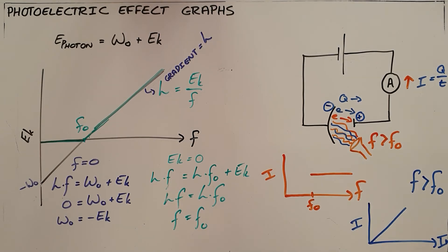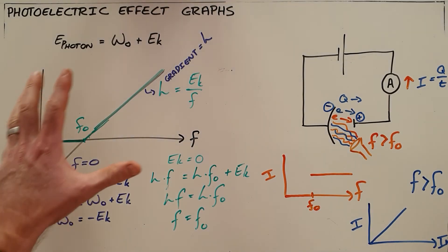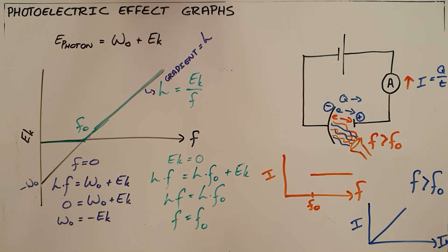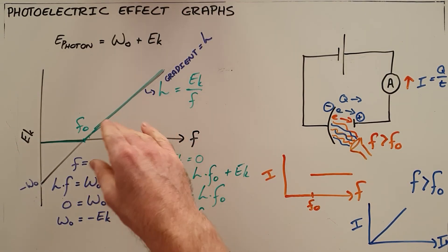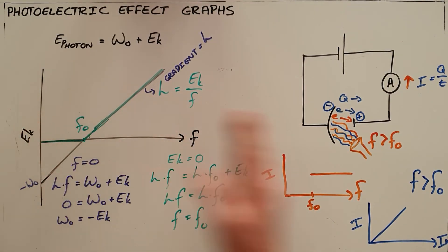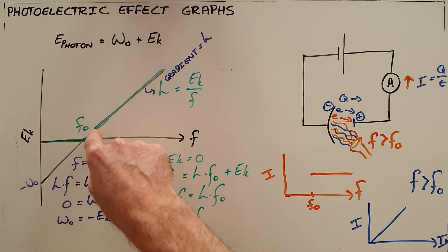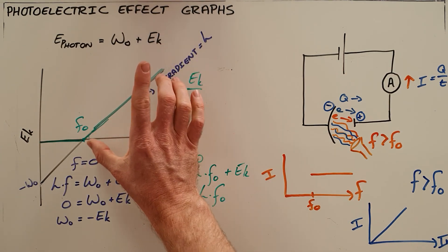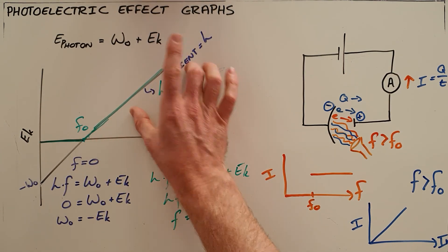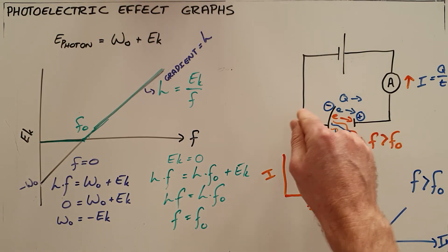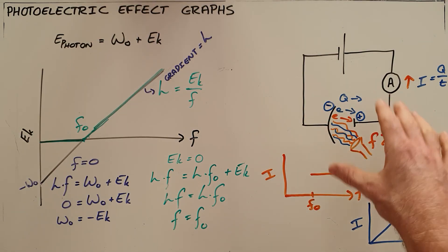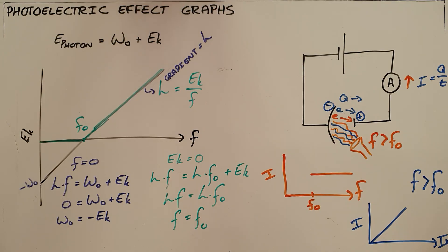Both graphs show the same key principles of the photoelectric effect: no photoelectrons are ejected until the threshold frequency is surpassed, the kinetic energy increases once the threshold frequency is exceeded, and intensity affects only the number of electrons ejected — it does not determine whether or not an electron is ejected as a photoelectron.